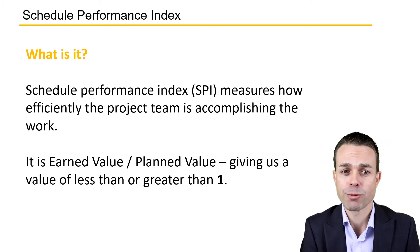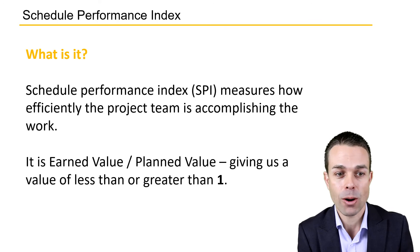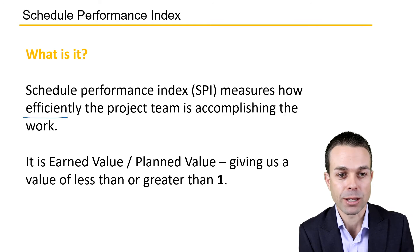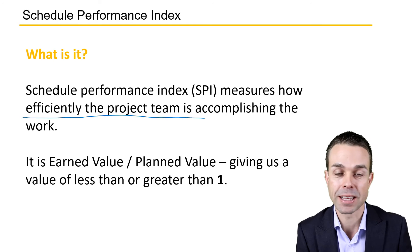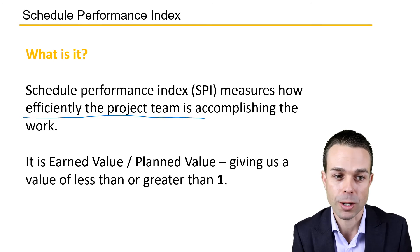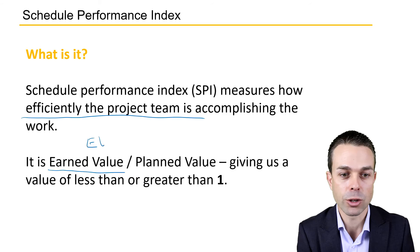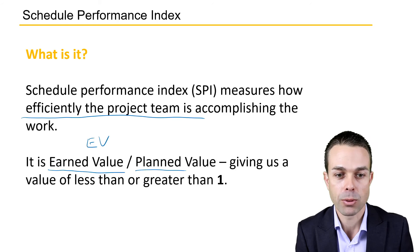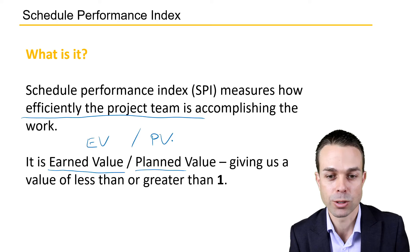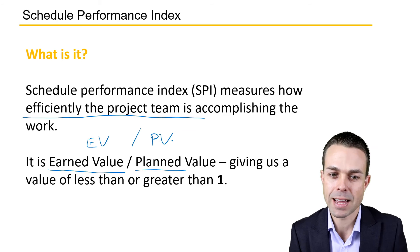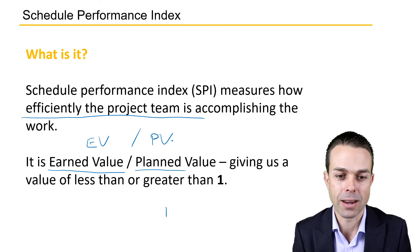The Schedule Performance Index measures how efficiently the project team is accomplishing that work. The way we calculate it is Earned Value, or EV, divided by Planned Value, which is PV. This gives us a value of less than or greater than one.